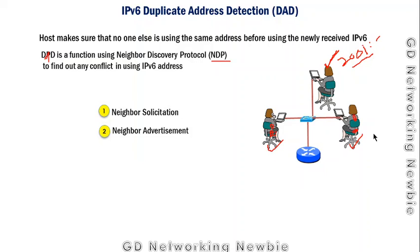We must avoid address conflicts, and Duplicate Address Detection is the mechanism to do so — it is really important in IPv6. The details of what is contained in the Neighbor Solicitation and Neighbor Advertisement messages will be discussed in other videos. In the simplest terms, this is the job of Duplicate Address Detection in IPv6. Thank you very much for your time and see you in another IPv6-related video.